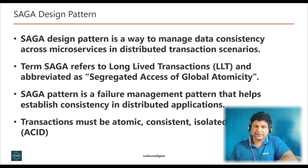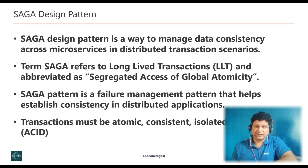The Saga pattern is a failure management pattern that helps establish consistency in distributed applications and coordinate transactions between multiple microservices to maintain data consistency. A microservice publishes an event for every transaction and the next transaction is initiated based on the event's outcome — it can take two different paths depending on the success or failure of the transaction. A transaction is a single unit of logic or work, sometimes made up of multiple operations. Within a transaction, an event is a state change that occurs in an entity, and a command encapsulates all information needed to perform an action or trigger a later event.